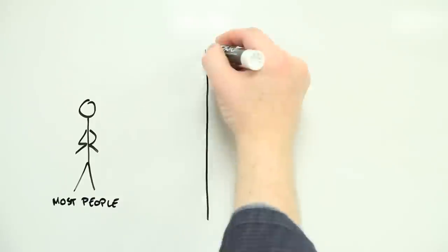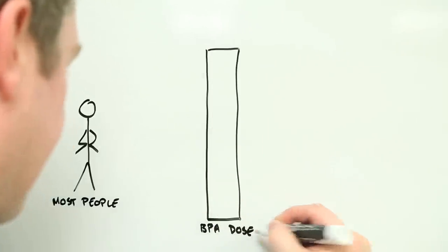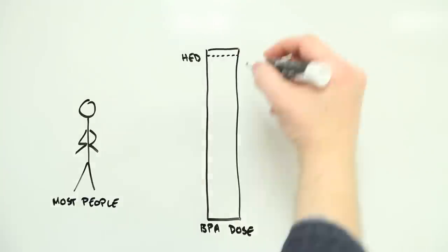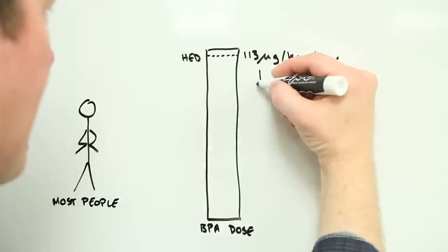Accounting for differences between mice and people, as well as differences between individuals, the reviewers came up with a draft TDI of 5 micrograms per day per kilogram of body weight.